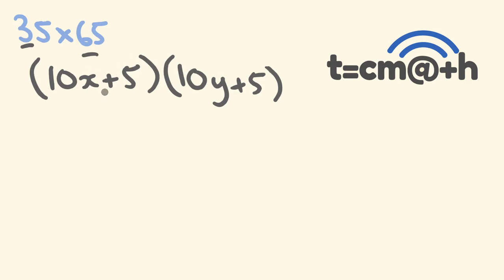So what happens when we do this? First off, we multiply these two parts. When we do this, we get 10x times 10y, which is equal to 100xy. To this, we're going to get two things. We're going to get 5 times 10y, and 5 times 10x.